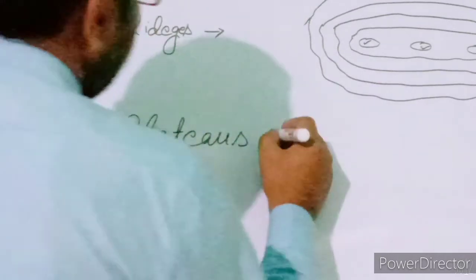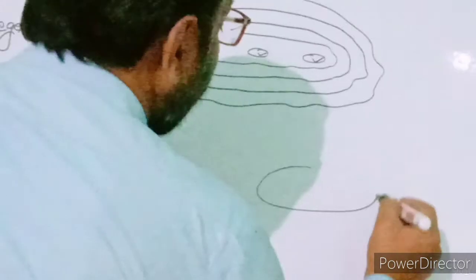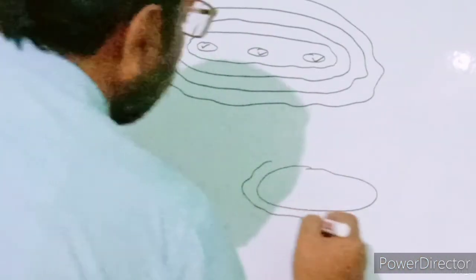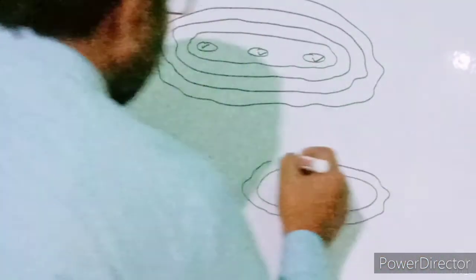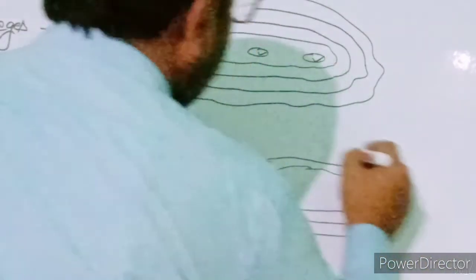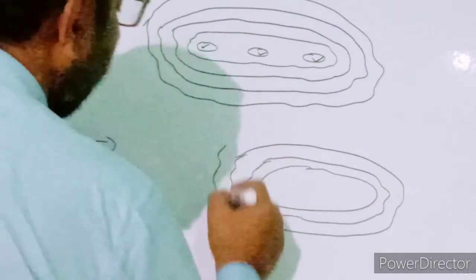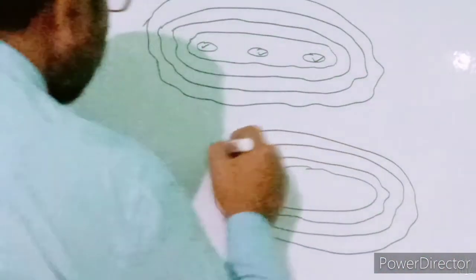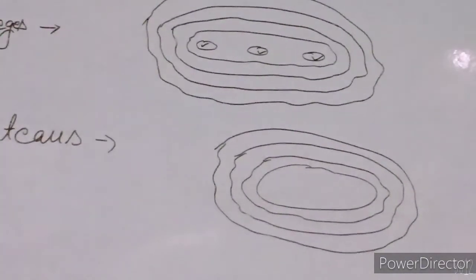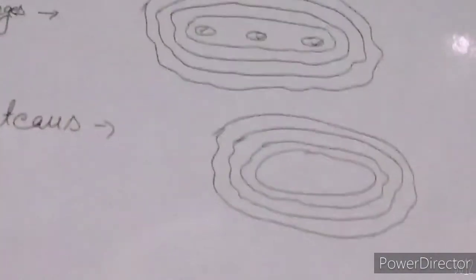The last relief feature is flat tops, also called plateaus. In flat tops, in the middle part we have an oval form, and this oval form remains surrounded by contour lines. These contour lines all around the oval form remain at equal intervals of distances, and this pattern of contour lines shows the plateau on the topo sheet.